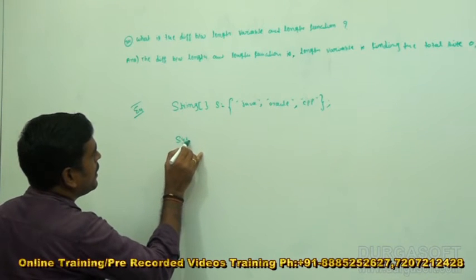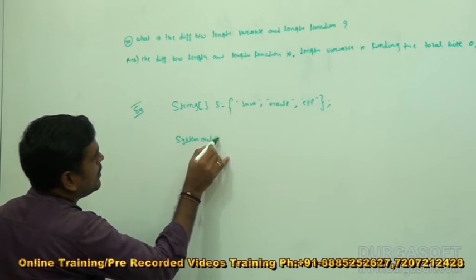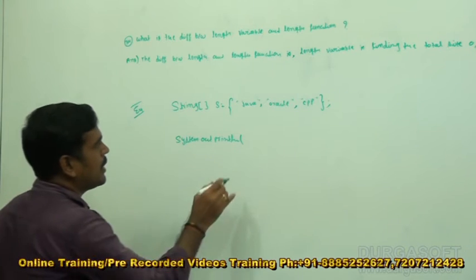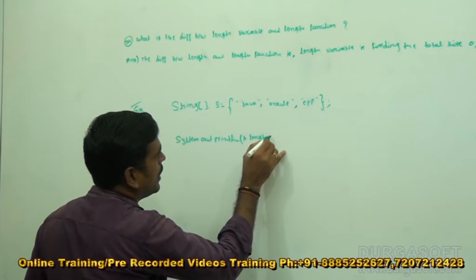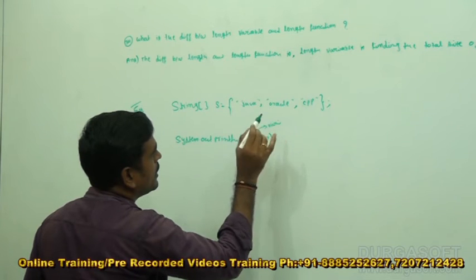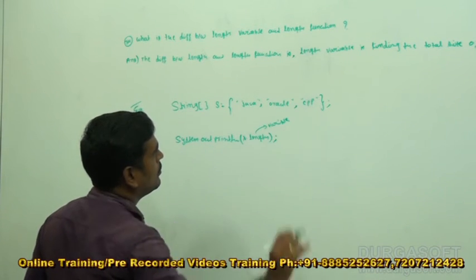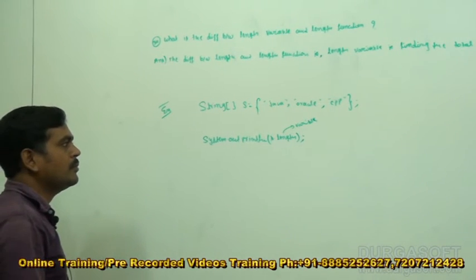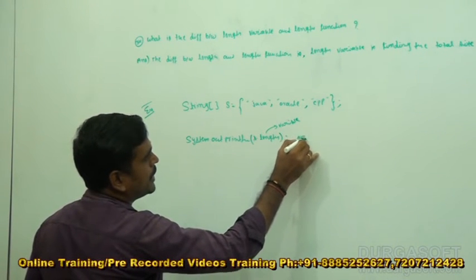So we write System.out.print with s.length — this is the length variable, given by the string variable. The output here is 3, because the array has 3 elements.